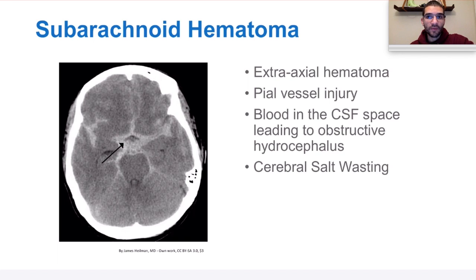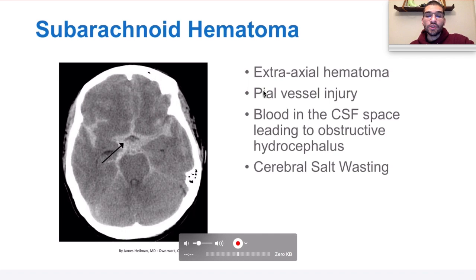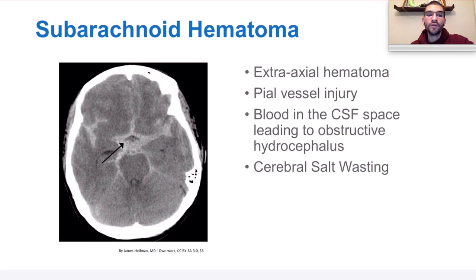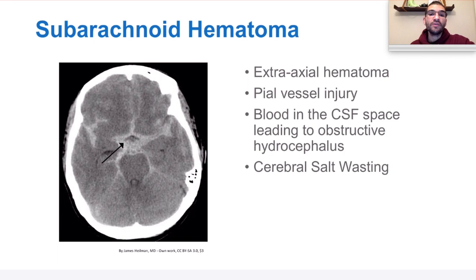Subarachnoid hematoma can also be associated with SIADH — syndrome of inappropriate ADH release — or cerebral salt wasting syndrome. Both lead to hyponatremia. In cerebral salt wasting, you lose salt and because salt tracks water, you lose a lot of both — resulting in high urine output and hypovolemia — treated with volume resuscitation, salt tabs, and fludrocortisone, which acts like aldosterone at the ENaC channel in the distal collecting tubule to help reabsorb sodium and water. In SIADH, high levels of ADH cause increased water reabsorption via vasopressin-2 receptors, leading to decreased urine output and hyponatremia — treated with fluid restriction.